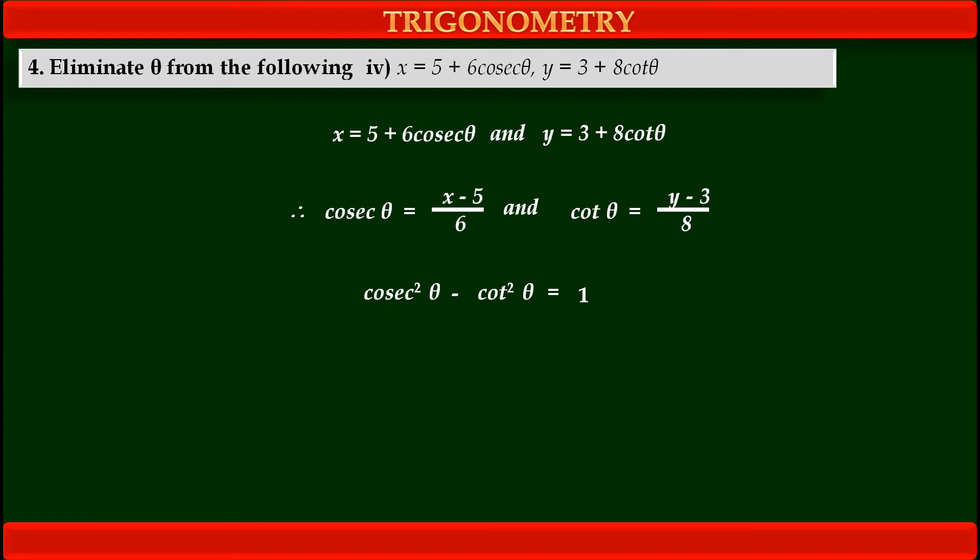Now we have values of cosec theta as well as cot theta. So substituting these values in this identity we get: in bracket x minus 5 upon 6 bracket squared minus y minus 3 upon 8 whole squared equals 1.